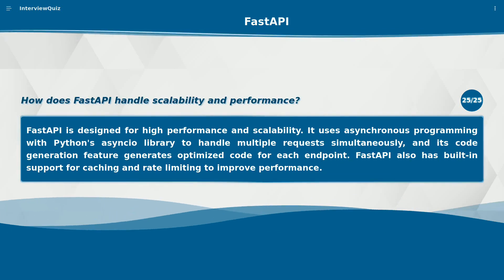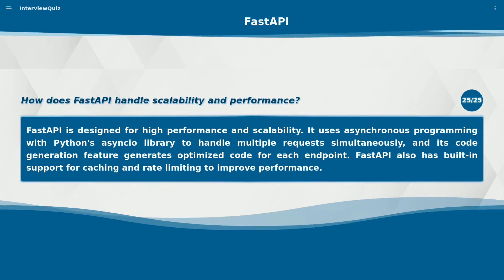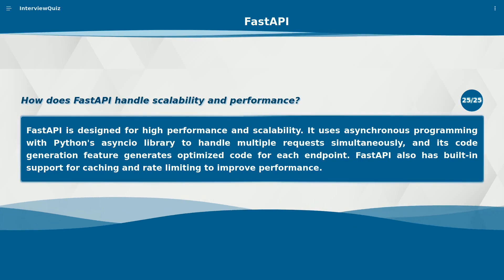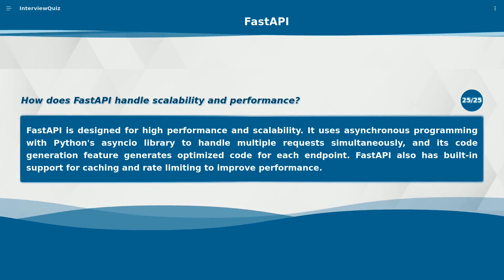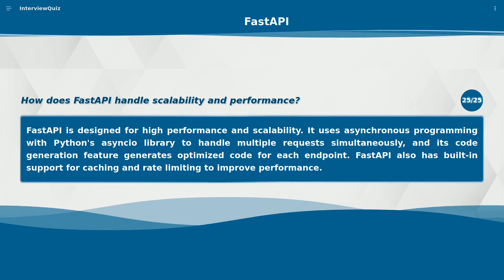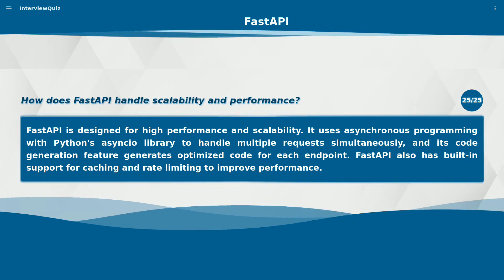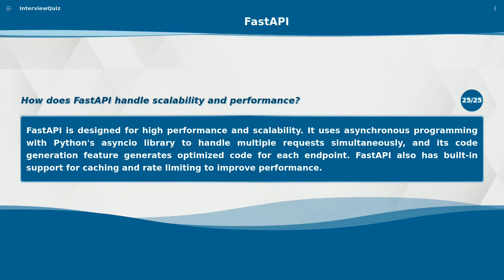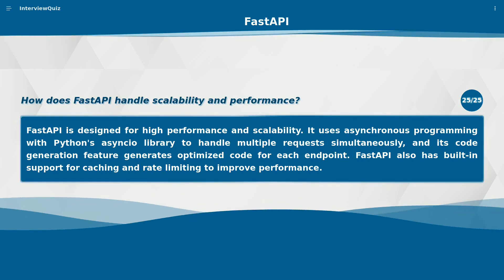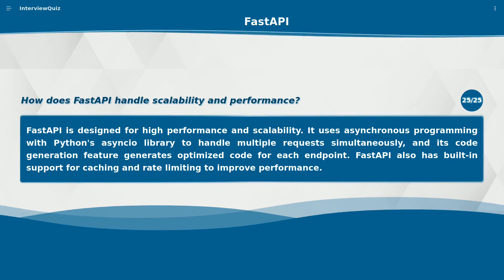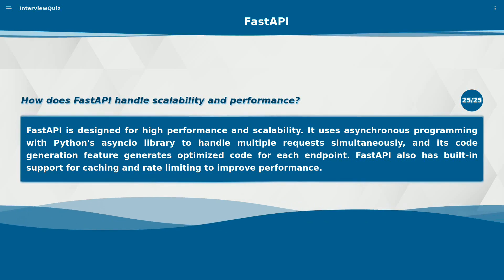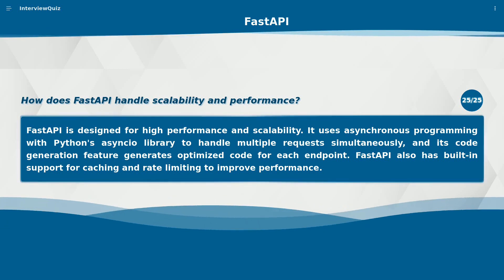How does FastAPI handle scalability and performance? FastAPI is designed for high performance and scalability. It uses asynchronous programming with Python's asyncio library to handle multiple requests simultaneously, and its code generation feature generates optimized code for each endpoint. FastAPI also has built-in support for caching and rate limiting to improve performance.